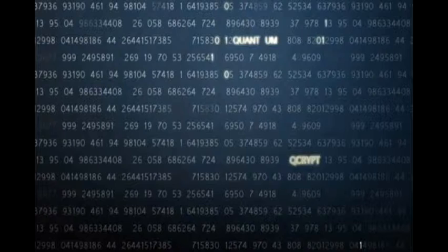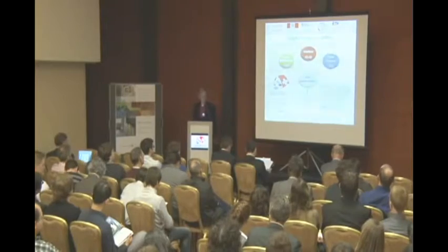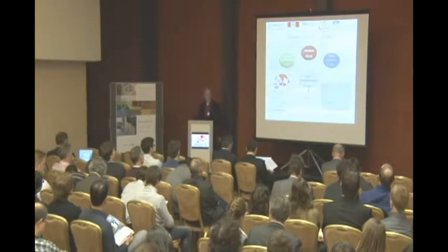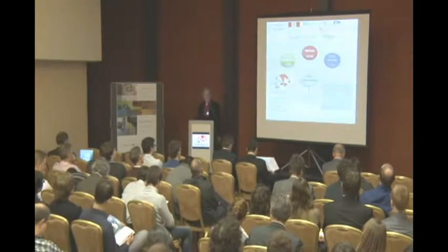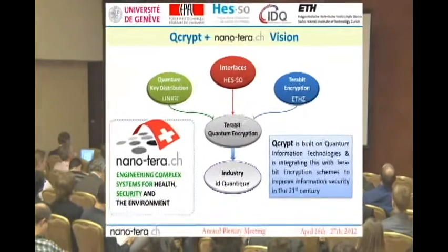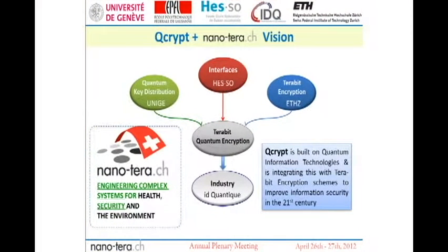This graphic case is a single fault on the effect that has to show the best performance in academia. The vision of our project QCrypt is to combine quantum key distribution with terabit encryption in order to improve information security for the 21st century.